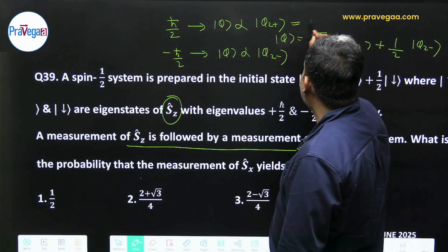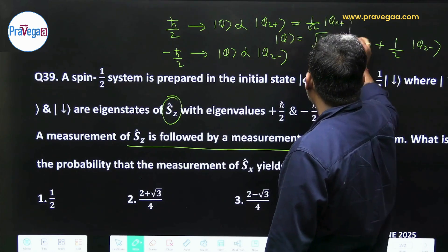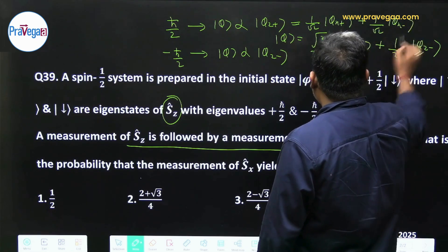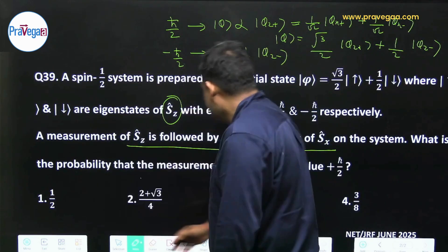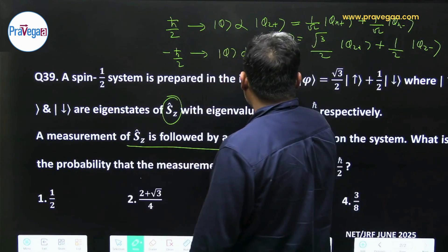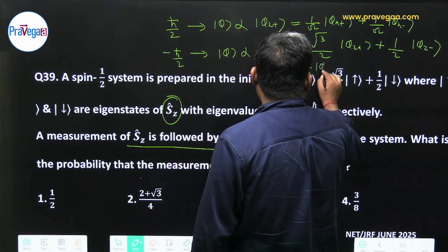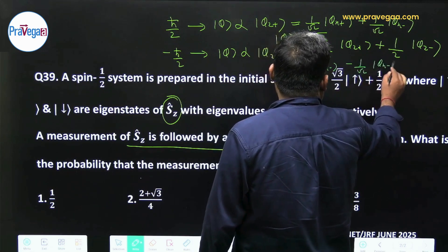Then φz+ can be written as 1/√2 φx+ plus 1/√2 φx-. And similarly φz- is nothing but 1/√2 φx+ minus 1/√2 φx-.